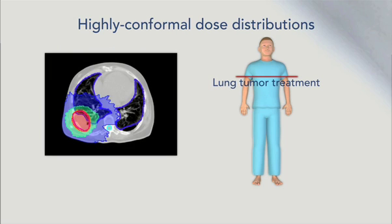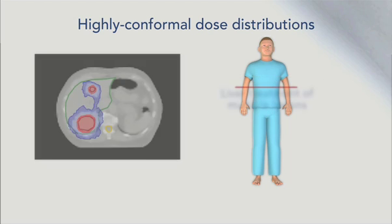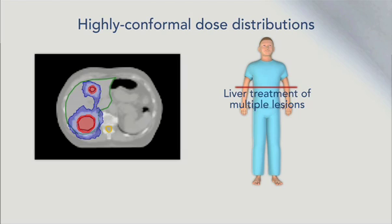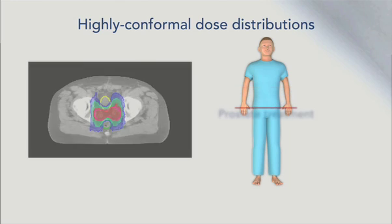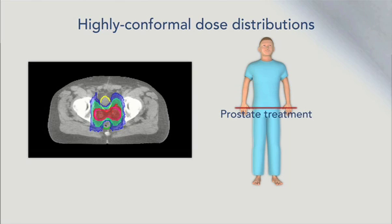Here, a tumor in the pleura surrounding the lung is covered by a highly focused dose distribution that steers sharply away from the cord. Two or more tumors can also be treated simultaneously with TomoTherapy. Treatment of the prostate and seminal vesicles while keeping dose away from the adjacent bladder and rectum is another challenge met by TomoTherapy.